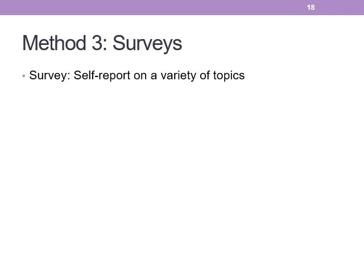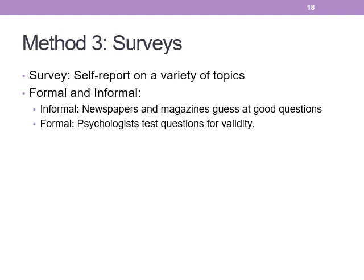Method three is surveys — self-report on a variety of topics. If you use certain sampling methods and analytical techniques, you can run statistical tests, but most surveys aren't using those methods, so it's just descriptive statistics. Informal surveys, like those from newspapers or Facebook, are guessing at good questions but aren't necessarily valid and reliable. Formal surveys have questions tested for validity and reliability — measures we'll be looking at in about three weeks.